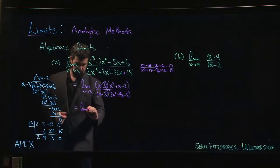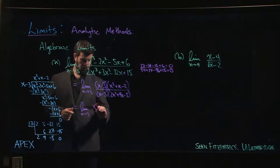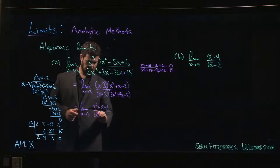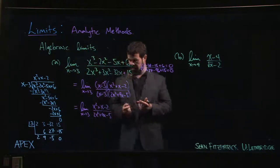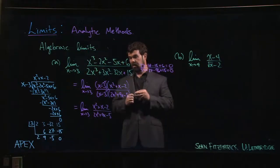Okay, so that leaves us with the limit as x goes to 3 of x squared plus x minus 2 over 2x squared plus 9x minus 5. And once again, you've got a rational function, so you can again ask yourself, is the denominator zero at 3?